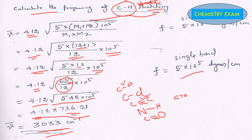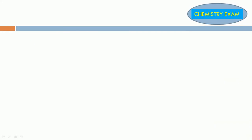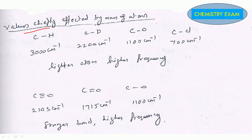Next: values are affected by mass of atoms. Here present are C-H, C-D, C-O, C-Cl—different types of atoms: hydrogen, deuterium, oxygen, chlorine bonded with carbon. If lighter element, higher frequency; heavier element, lower frequency.